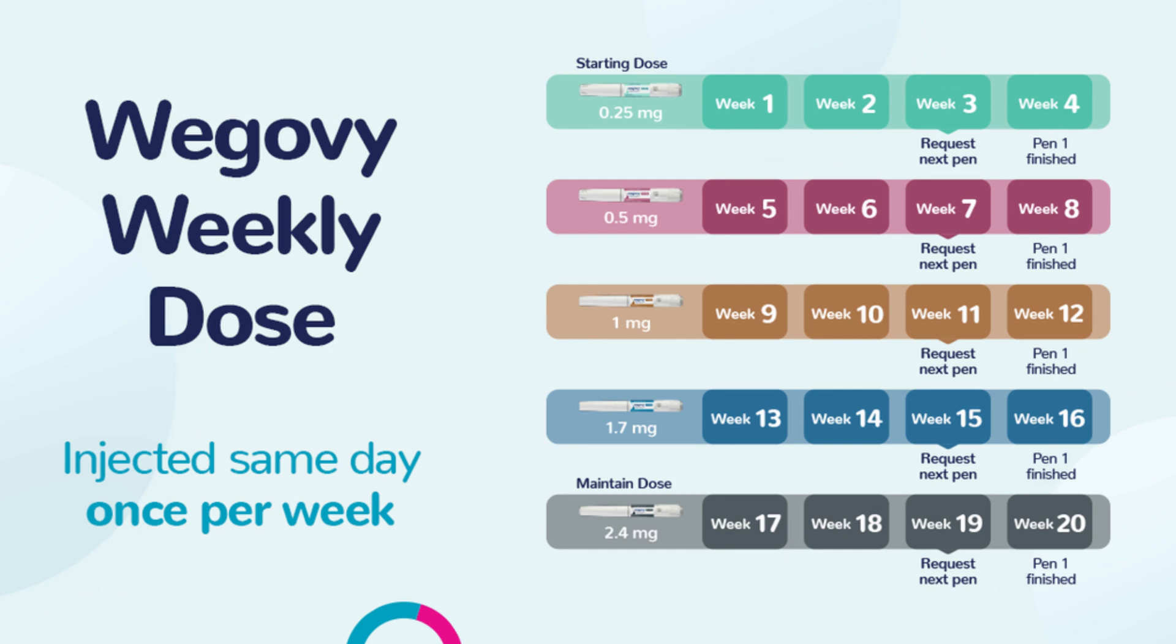In your fifth month, you'll increase your weekly dose to 2.4 milligrams. From then onward, you'll continue taking that dose each week. You'll check in with us when requesting your next dose so we can track what's working for you and when you're ready to fill your next dose.